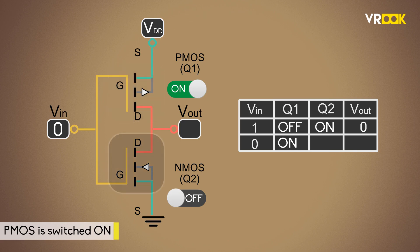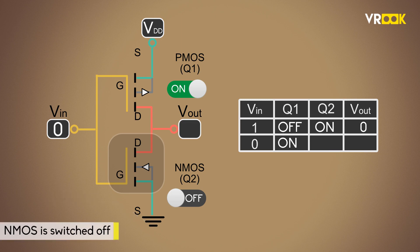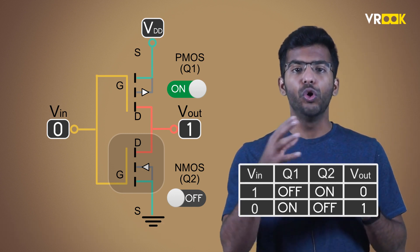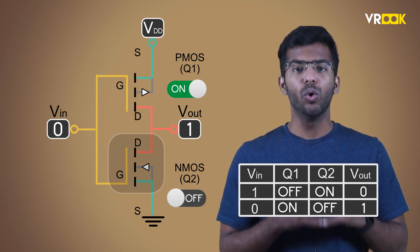But in NMOS, the gate voltage will become 0 volts and the source is also at 0 volts as it is connected to ground. Hence, the voltage is not enough to switch on the NMOS. Therefore, the NMOS is switched off. In this case, the output terminal acts like it is connected directly to VDD, the high voltage. So, the output will be high or logic 1. This is case 2 where the logic 0 or low voltage at the input gives the logic 1 or high voltage at output.